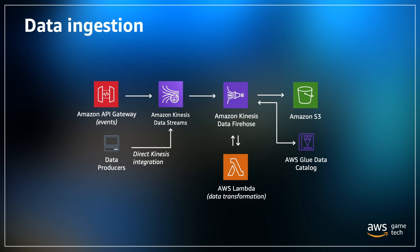Kinesis data firehose consumes the event data in real time from your Kinesis data streams and triggers an AWS Lambda function for event preprocessing. This Lambda function executes code to validate, transform, and process your input game events from Kinesis data firehose before returning the events back to the stream to be stored in Amazon S3. This is just to optimize your data for analytics before even storing it in S3.